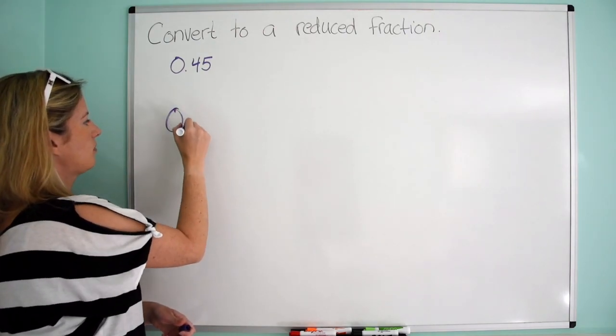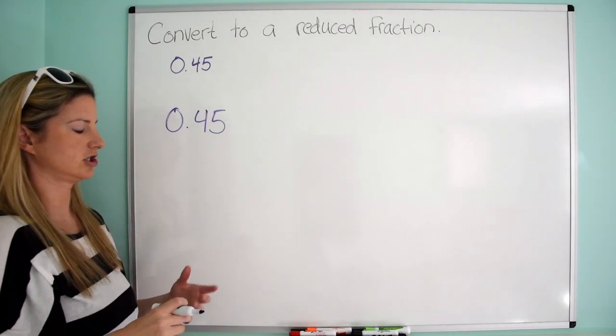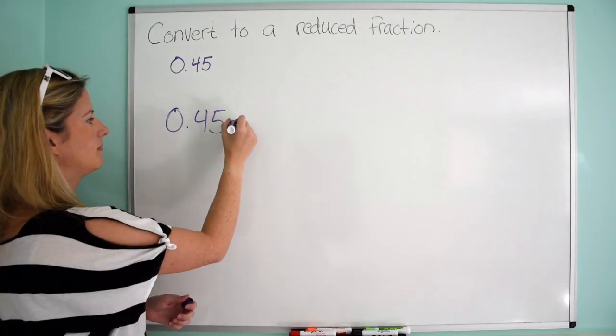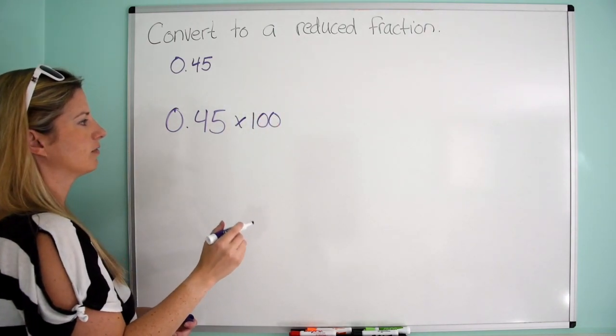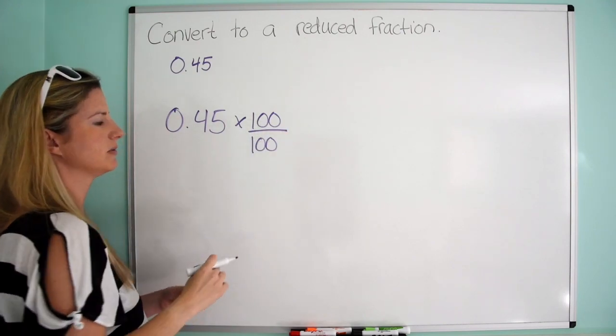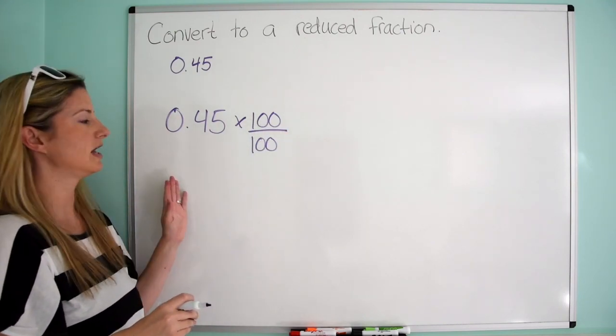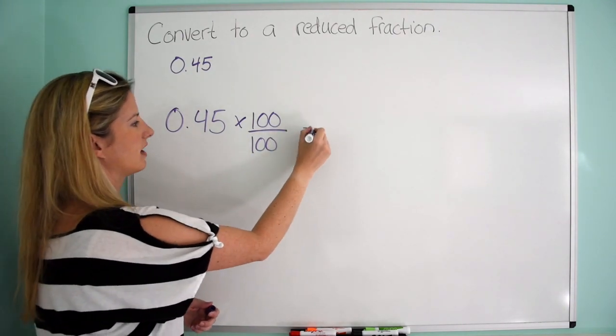So if we have 0.45, and we want it to look like a fraction, what we can do is we can say, I'm going to multiply it by 100. But remember, if we're multiplying by 100, we have to do it as 100 over 100 because otherwise we're changing the value. So now we're just multiplying by 1. So when I multiply 0.45 by 100,